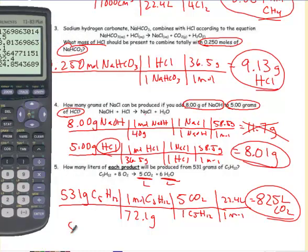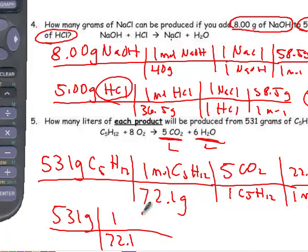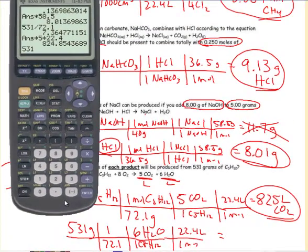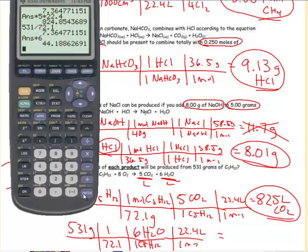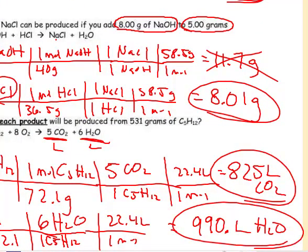And then the second part, it's going to be exactly the same. 531 grams, 72.1 and 1 mole, 1 C₅H₁₂. This time I'm looking for water, so 6 H₂Os, and then 1 mole, 22.4 liters. So, 531 divided by 72.1, there's my moles, times 6, times 22.4, 990 liters of H₂O. So, all right, so there's the first page.